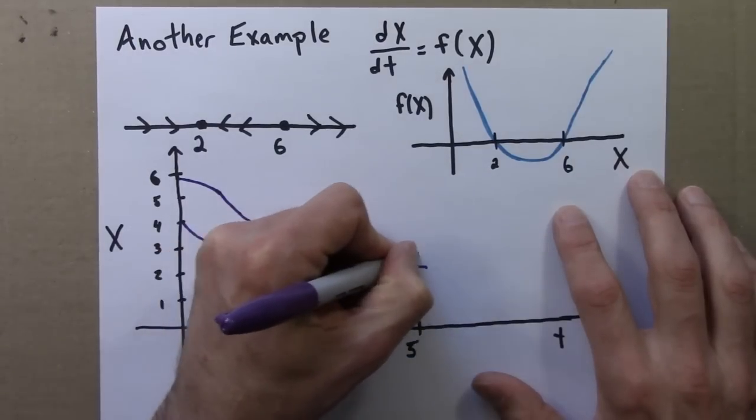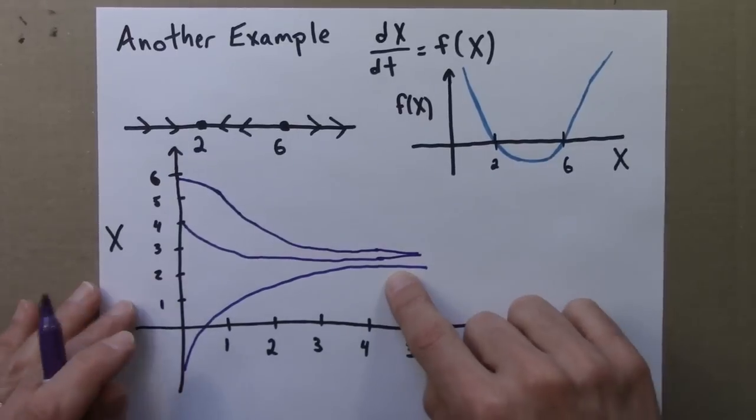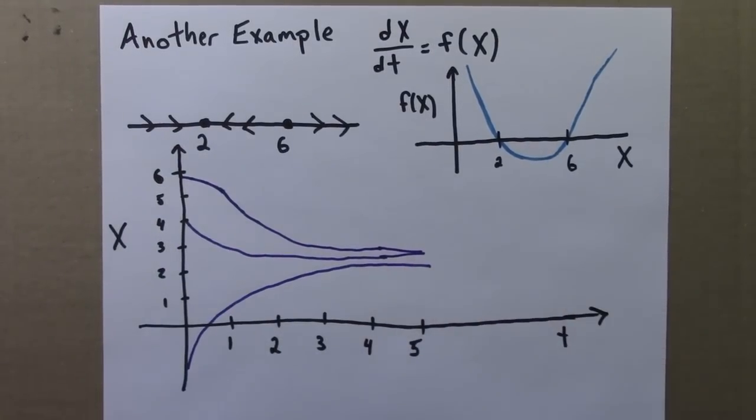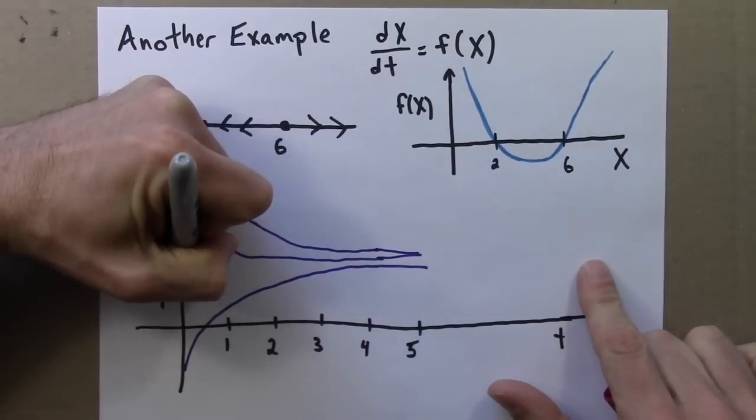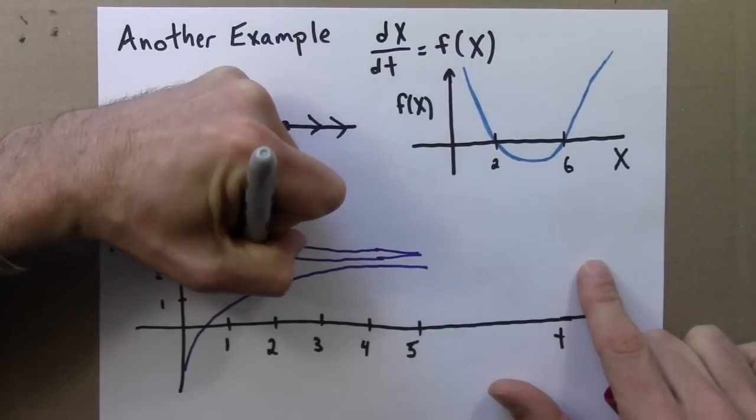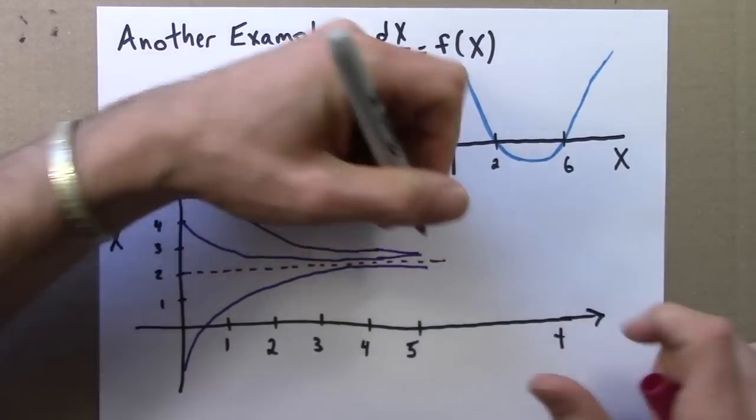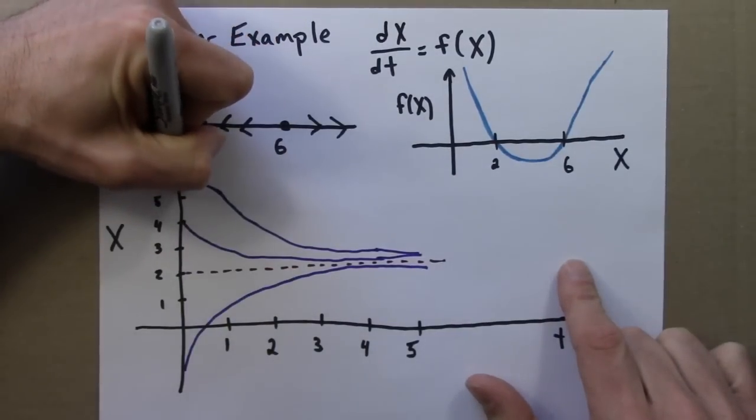All of these curves are approaching this fixed point at 2. Maybe I'll draw the equilibrium point as a dotted line.